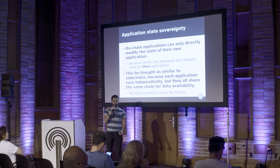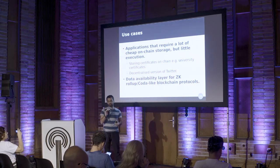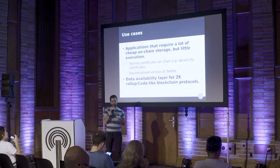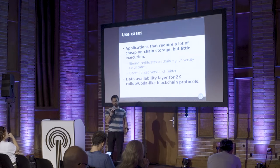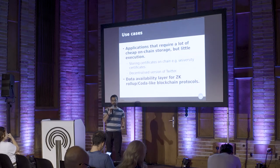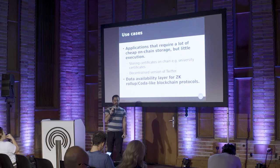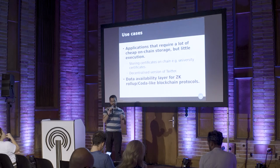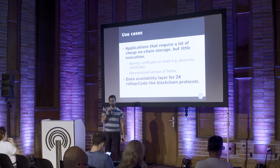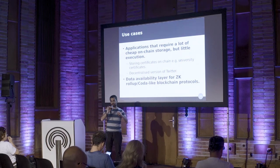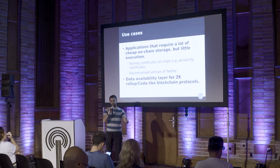One of the main problems with Plasma is data availability, and there's no easy solution to it. The primary use cases for something like this are applications that require a lot of on-chain data storage — for example, if you wanted to create a decentralized version of Twitter with 100% data availability guarantees, it would be much cheaper than posting everything on Ethereum. Or something that just requires record storage, like a domain name registration system. It could also potentially be useful as a data availability layer for other blockchain schemes like Plasma, or schemes such as Zero Knowledge Rollup, where zero-knowledge proofs compress the entire blockchain into zk-SNARKs, but still need data availability proofs to verify that the data behind the SNARKs is actually available.